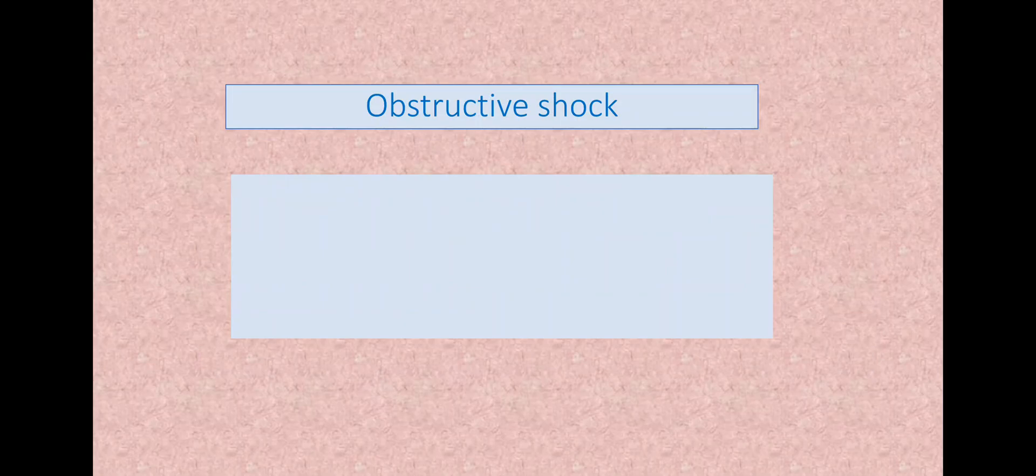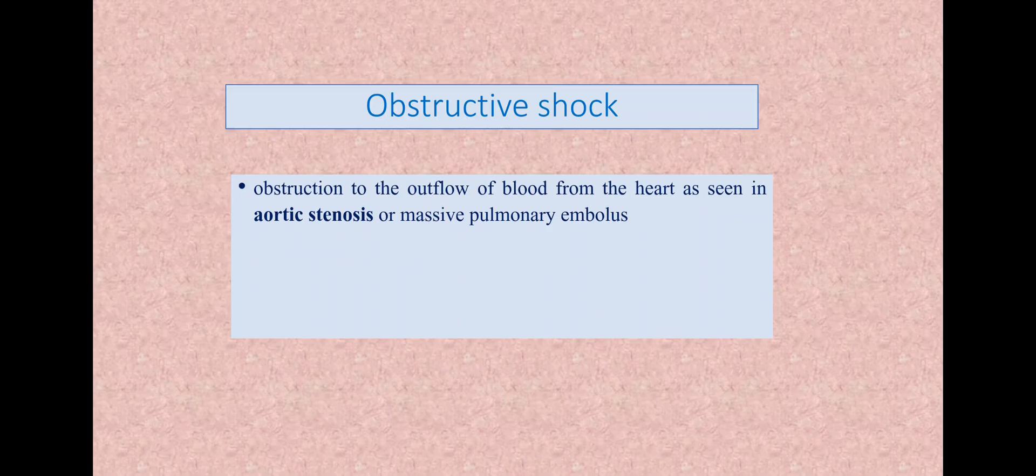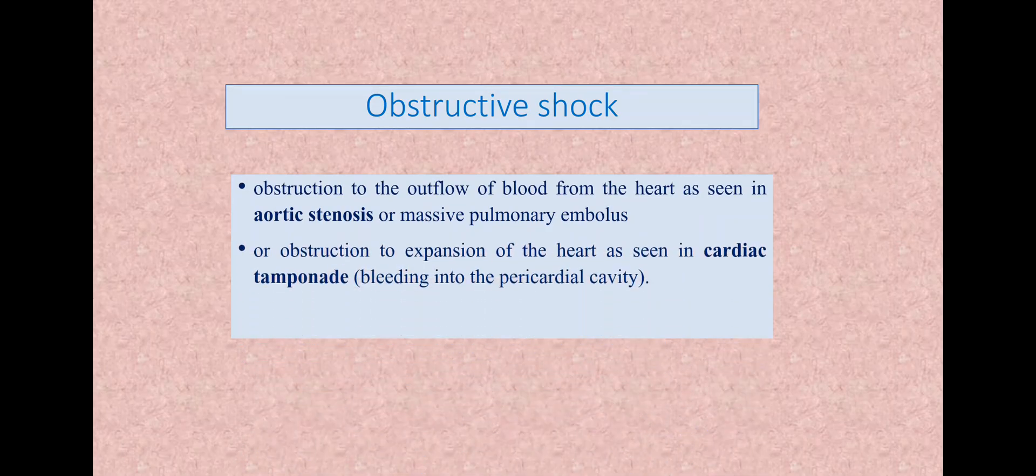Obstructive shock. Fourth category. Hypovolemic, distributive, cardiogenic, obstructive. Obstructive shock means there will be obstruction to the outflow of the blood, as seen in aortic stenosis. The blood is not able to go into the aorta. So there will be back pressure. Or there is a massive pulmonary embolus. Or there is obstruction to the expansion of the heart as seen in cardiac tamponade, bleeding into the pericardial cavity. So the heart cannot act as a proper pump. It cannot expand. There is blood outside that is causing pressure to the heart.